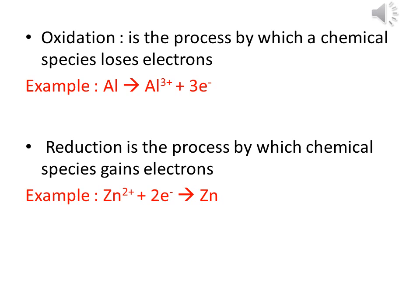Reduction is the process by which a chemical species gains electrons. An example is when a metal ion, Zn²⁺, gains two electrons to form the metal Zn: Zn²⁺ + 2e⁻ → Zn.